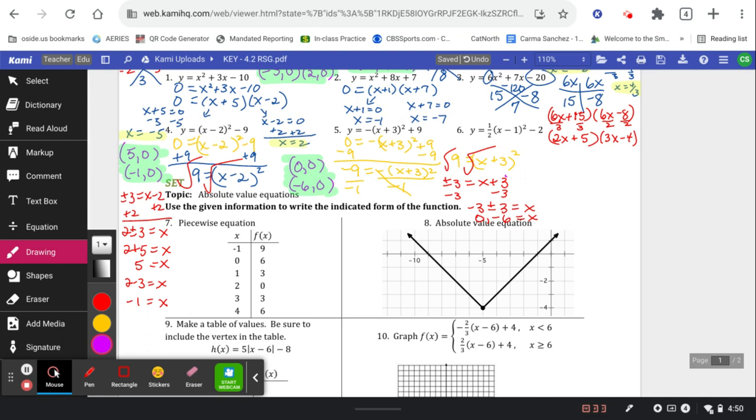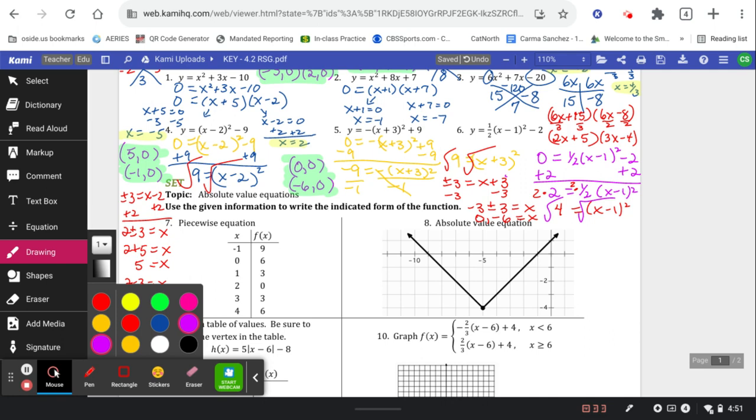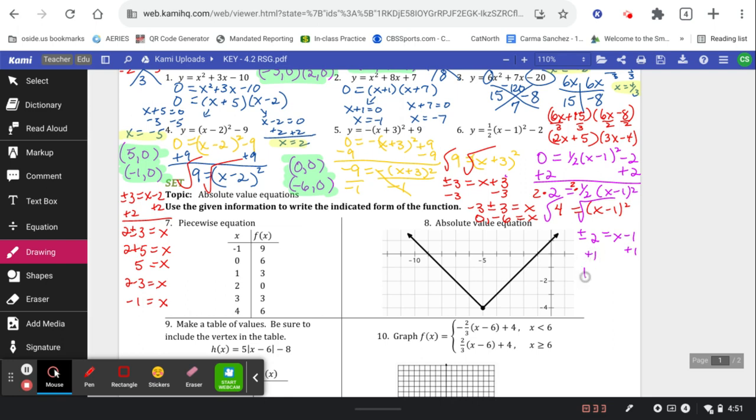All right, pause the video, set this next one equal to 0, and try it. Let's see how you did. Add the constant. Get rid of that 1 half by multiplying both sides by 2. Root both sides. It's going to give you plus or minus 2 is equal to x minus 1. So we get 1 plus or minus 2. Well, 1 plus 2 is 3. 1 minus 2 is negative 1.